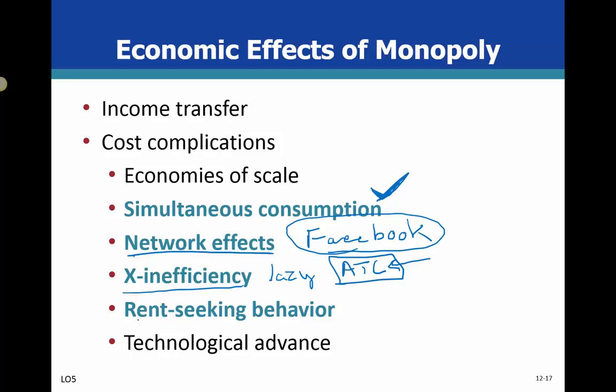There's an X-inefficiency component where you can compute how differently a monopoly would operate if it were competitive. Finally, there's rent-seeking behavior — monopolies like their monopoly power and want to keep it, so they hire lobbyists and special interest groups to help them maintain their monopoly status.